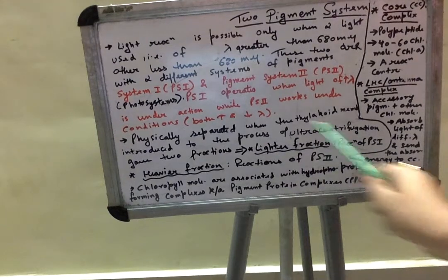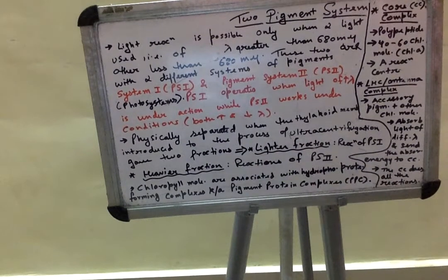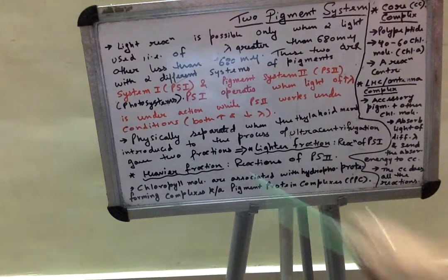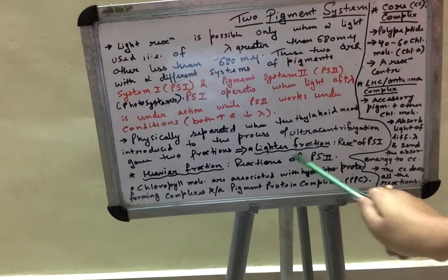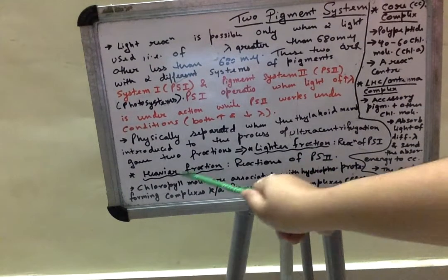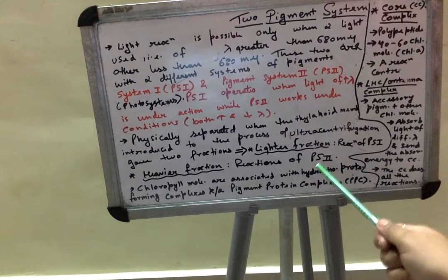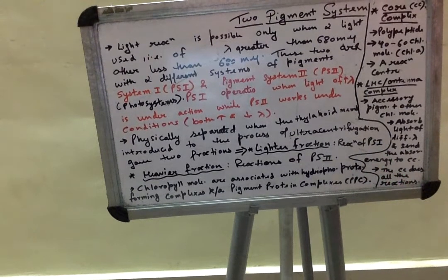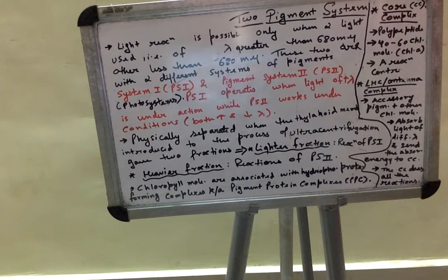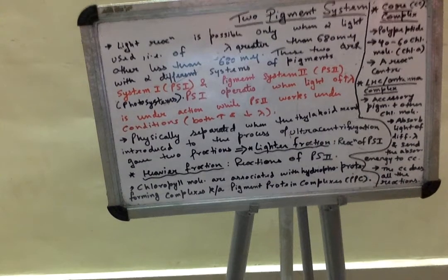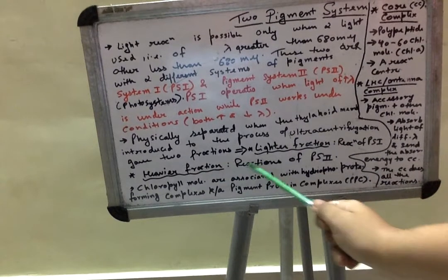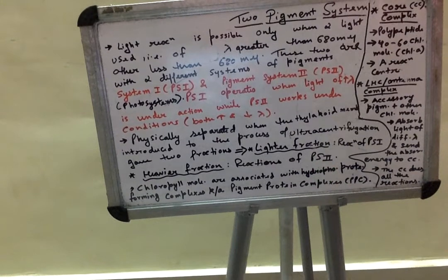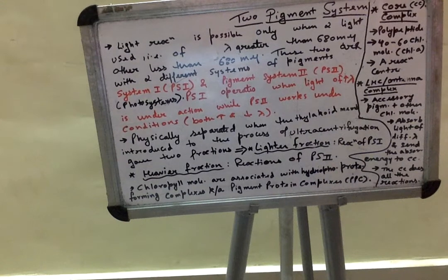Physically, these two types of photo systems or pigment systems are separated when the thylakoid membrane is subjected to ultracentrifugation, giving two fractions. The first is a lighter fraction and the second is a heavier fraction. The lighter fraction involves all reactions associated with PS1 or photo system one, and the heavier fraction involves all reactions associated with PS2 or photo system two.